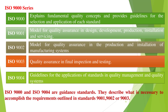Looking at the series more closely: ISO 9001 is mainly based on design, development, production, installation, and servicing. ISO 9002 covers production and installation of manufacturing systems. ISO 9003 covers final inspection and testing. ISO 9004 provides guidelines for the application of standards. Most importantly, ISO 9000 and ISO 9004 are guidance standards — they describe what is necessary to accomplish the requirements outlined in ISO 9001, 9002, or 9003. That is, ISO 9004 guides what needs to be followed to accomplish those requirements.